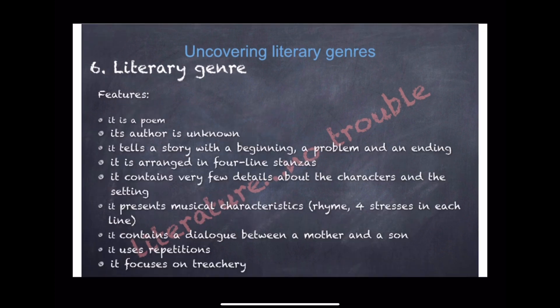Now let's take a look at the features of the text to see if Lord Rendell is really a classic example of a medieval ballad. We know that Lord Rendell is a poem whose author is unknown. It tells a story with a beginning, a problem, and an ending. It is arranged in four-line stanzas and contains very few details about the characters and the setting. It presents musical characteristics.